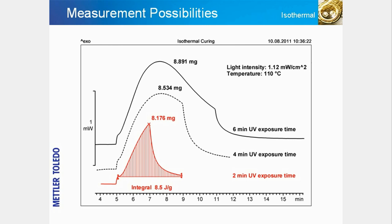On the other hand, studies of chemical reactions allow information to be gained about the rate and duration of curing reactions. The example in the slide shows the curing reaction of a powder coating. Powder coatings are usually sprayed onto the substrate and then cured either thermally at about 180 degrees Celsius or by means of UV light at lower temperatures.